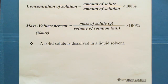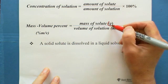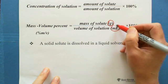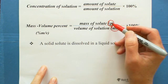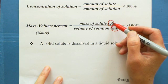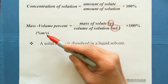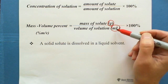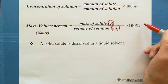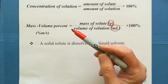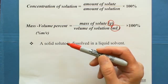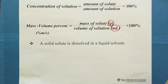To make this clear, in mass volume percent, mass over volume means the mass of solute is in grams on top, and the denominator is volume in milliliters, times 100%. Mass volume percent is mostly used when solid is dissolved in a liquid solvent.